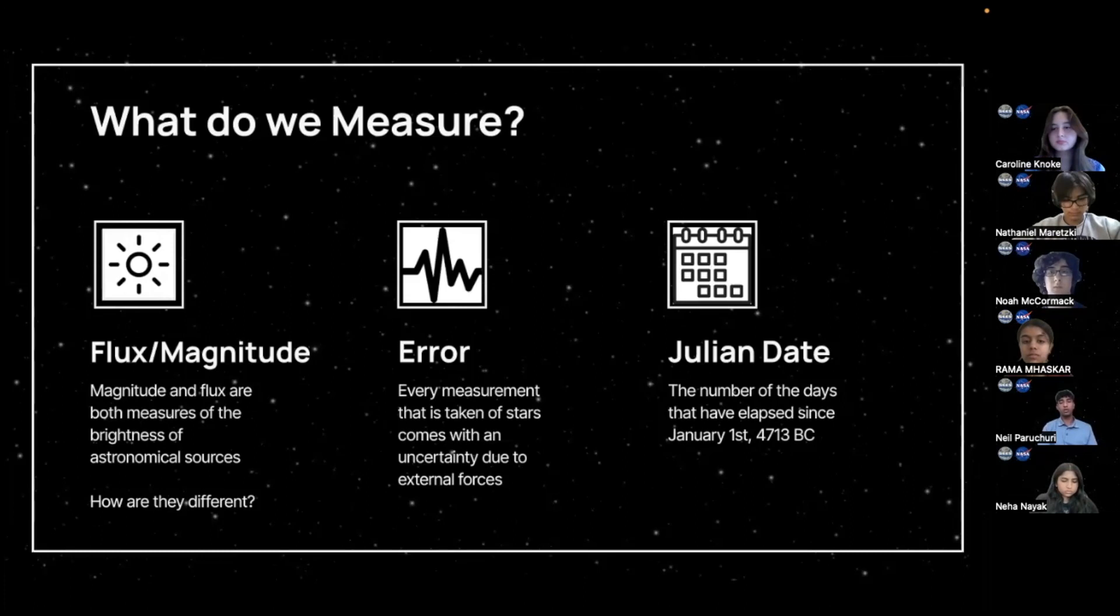Lastly, we measure the Julian date. When measuring time, the Julian date system is more efficient because astronomers need to calculate and subtract and add dates, and the Gregorian calendar, which is what we normally use, isn't as efficient.